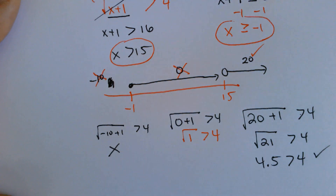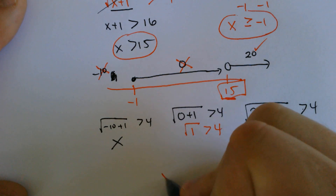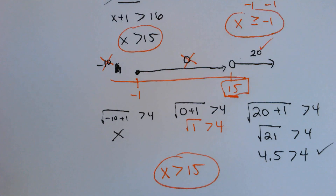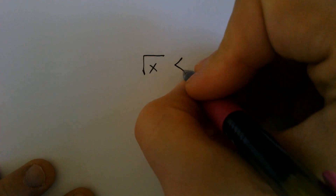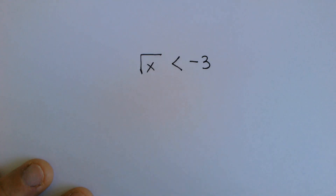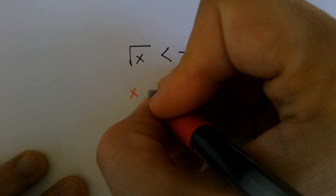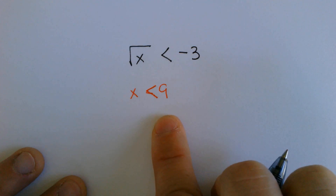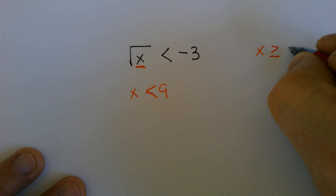So what area is included in our answer? The zone greater than 15 worked. So our only answer this time would be x is greater than 15. One more — it's going to be a quick one, I promise. Let's say we got just the square root of x is less than negative 3. Simple, right? Square both sides: x would be less than 9, because negative 3 squared is 9. And what's underneath the square root — that x — also has to be greater than or equal to 0.